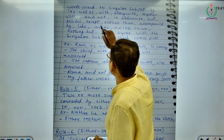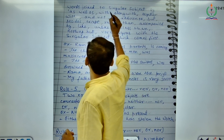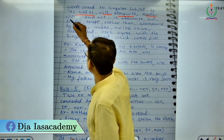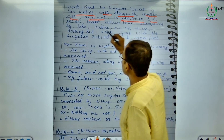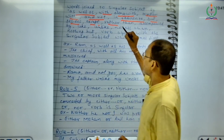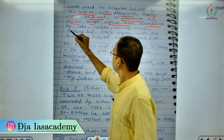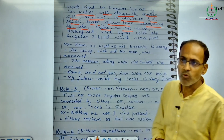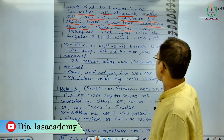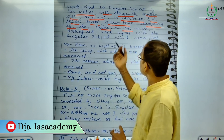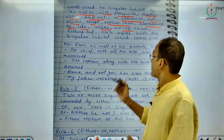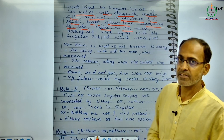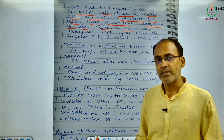There are some words like: as well as, with, along with, together with, and not, in addition to, but, besides, except, rather than, accompanied by, like, unlike, no less than, nothing but. Whenever these words join a singular subject, the verb agrees with the singular subject — that means the verb is going to be singular.